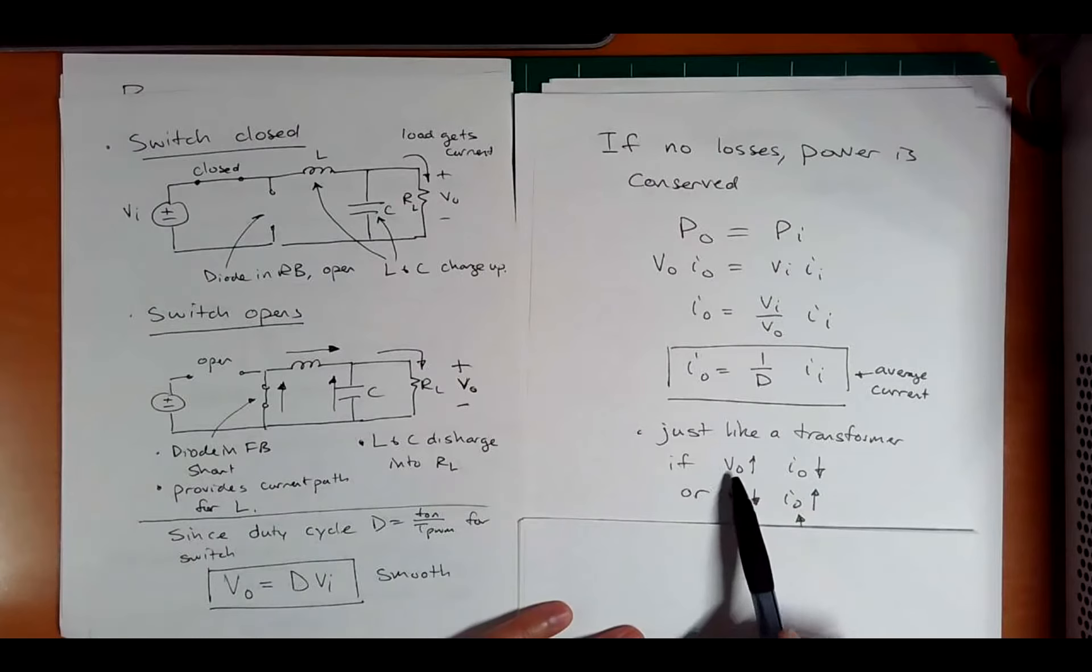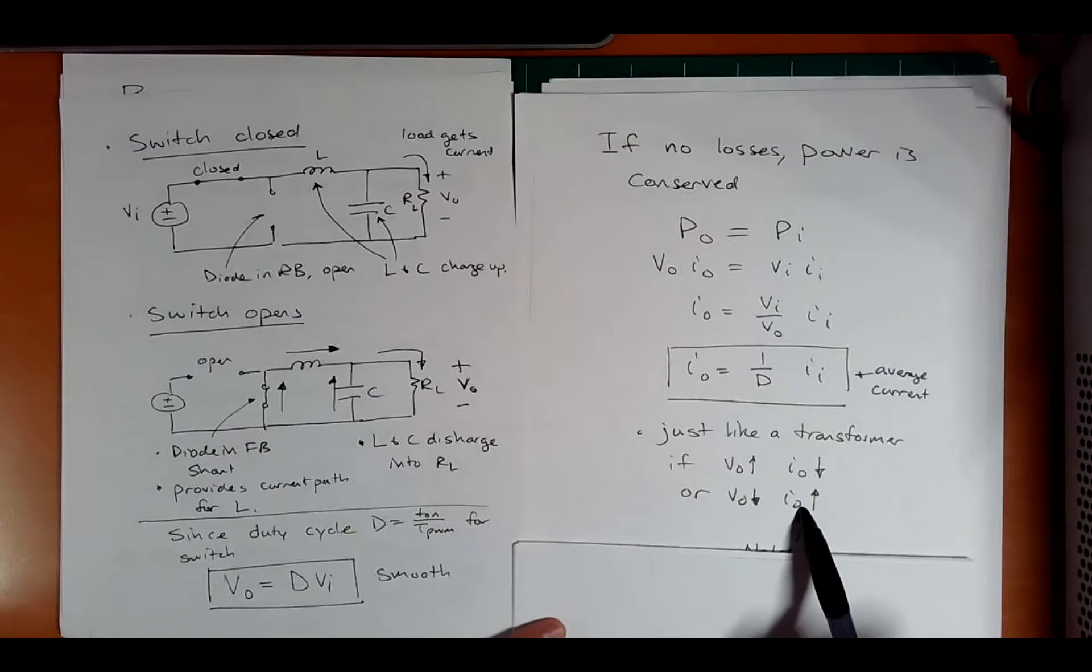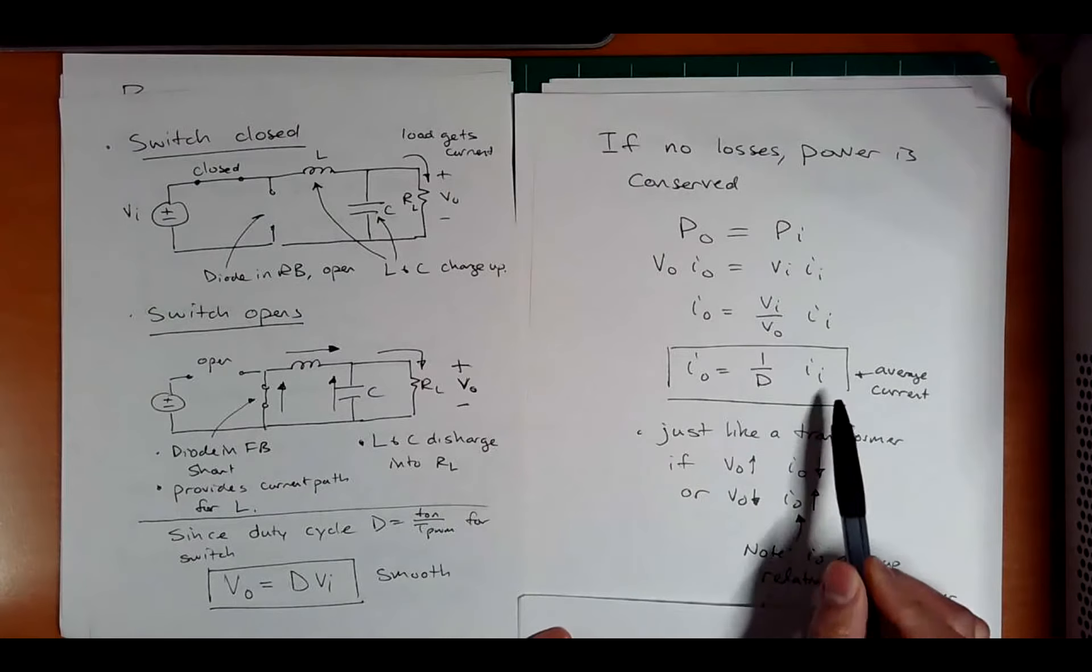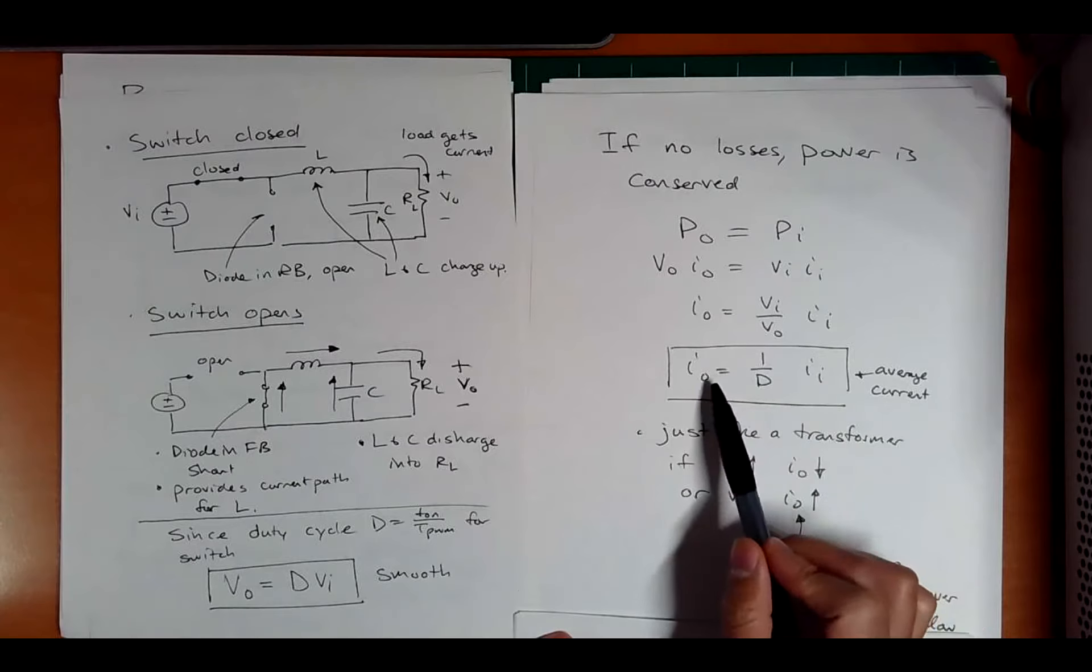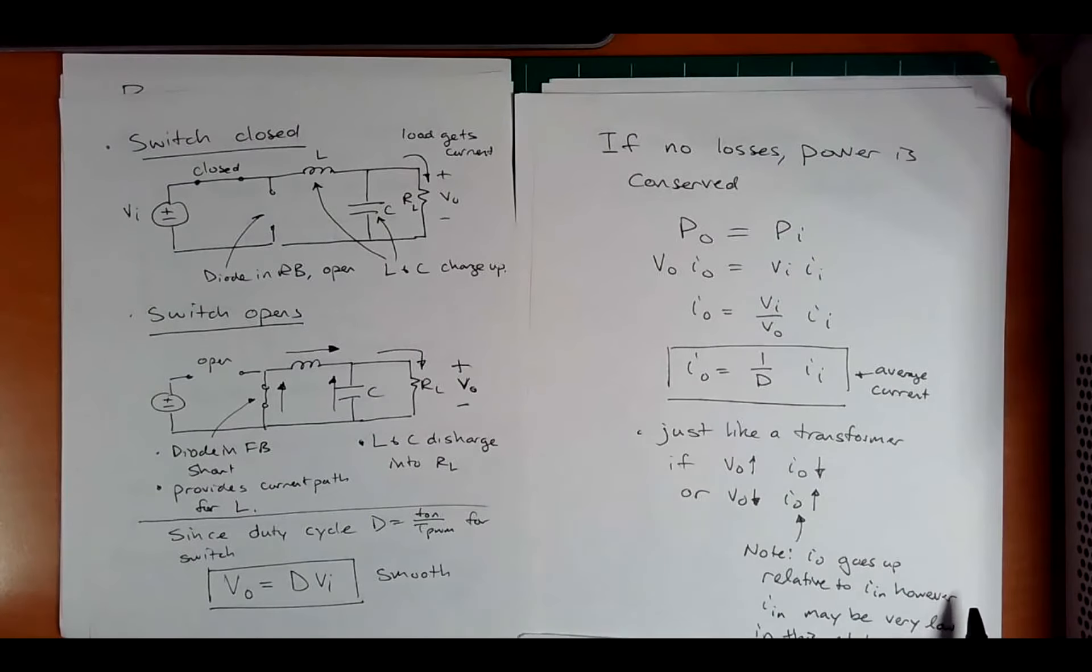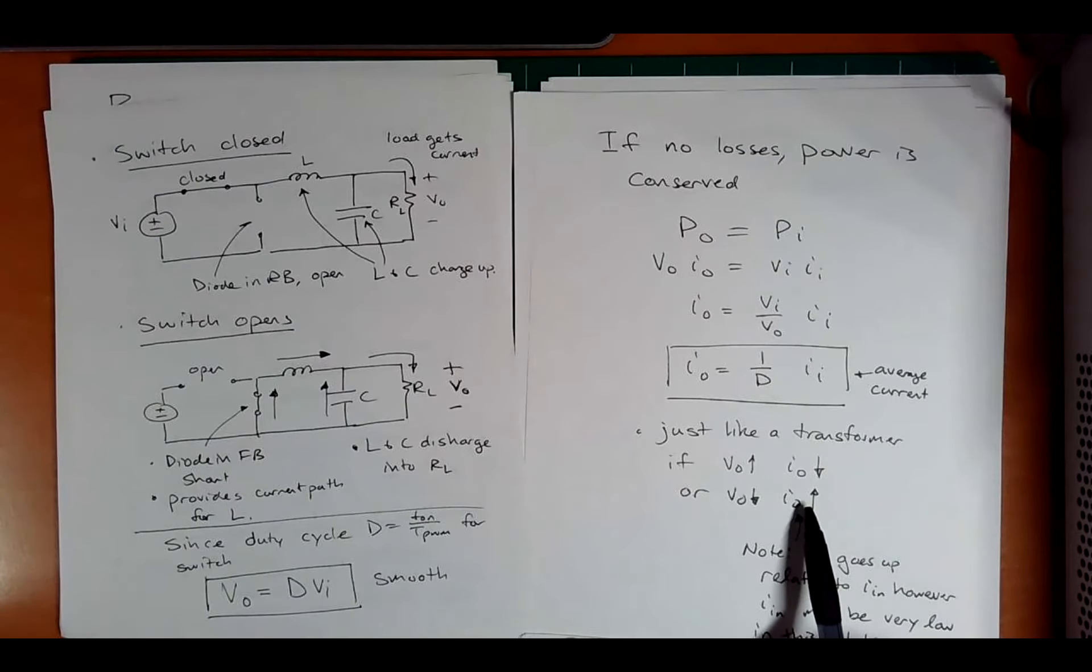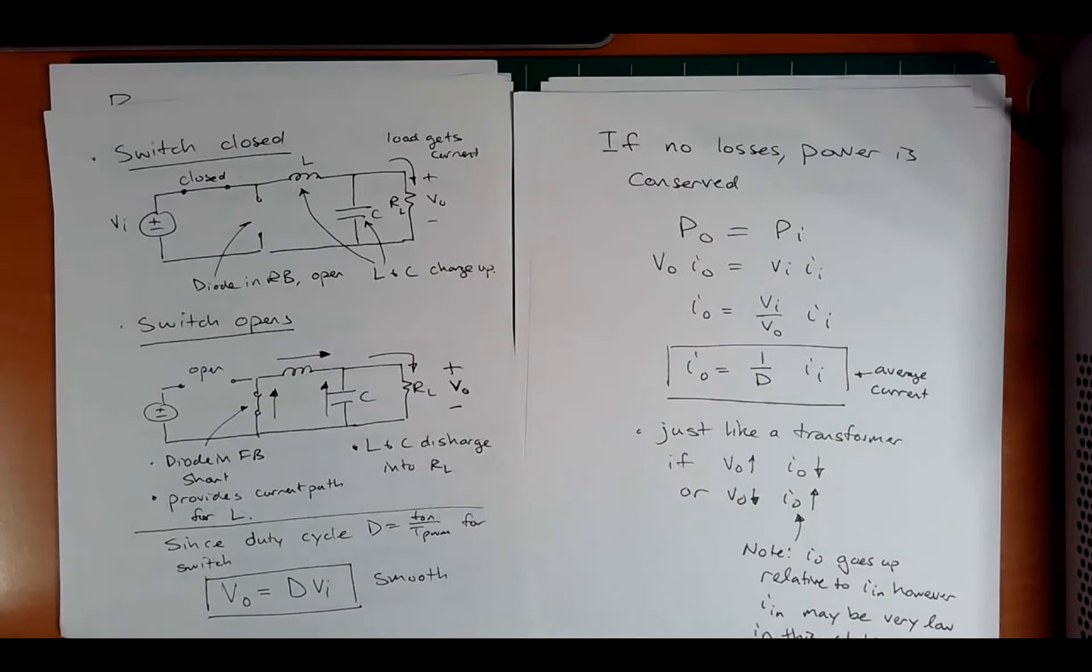The concept is, when the voltage output goes up relative to the input, then the current is going to go down. Or when the voltage goes down, the current ratio goes up. Now, I want you to note something. We'll see it in the simulation. The output current goes up relative to the input current. However, they both, in terms of their absolute value, might be very low. So don't just think, oh, low voltage, yeah, super high current. No, no, no. It's high relative to the input. And both could be low values. And you will see that.